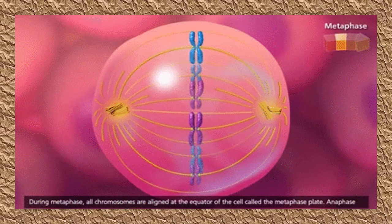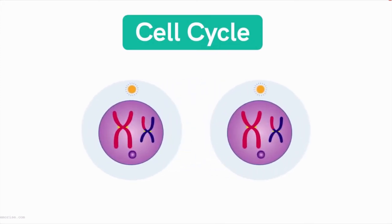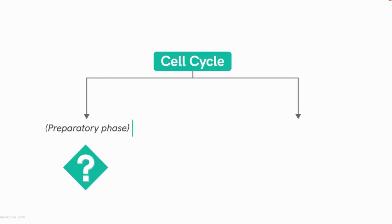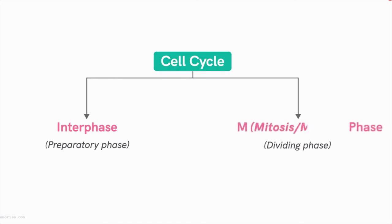Before starting the next topic — meiosis — let's differentiate between meiosis and mitosis. The cell cycle has two major phases: one helps in the preparation of the cell for division, called interphase, and the other carries out the division itself, called the M phase, where M stands for either mitosis or meiosis. How the cell decides which to undergo depends on various factors and the type of cell dividing.